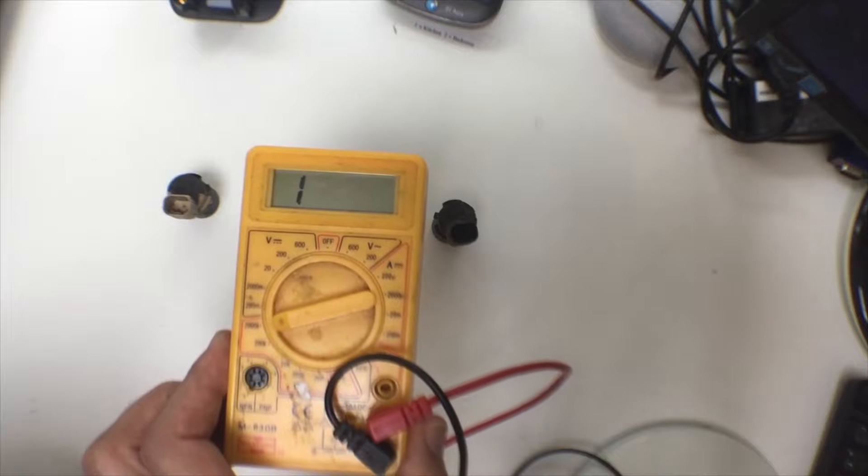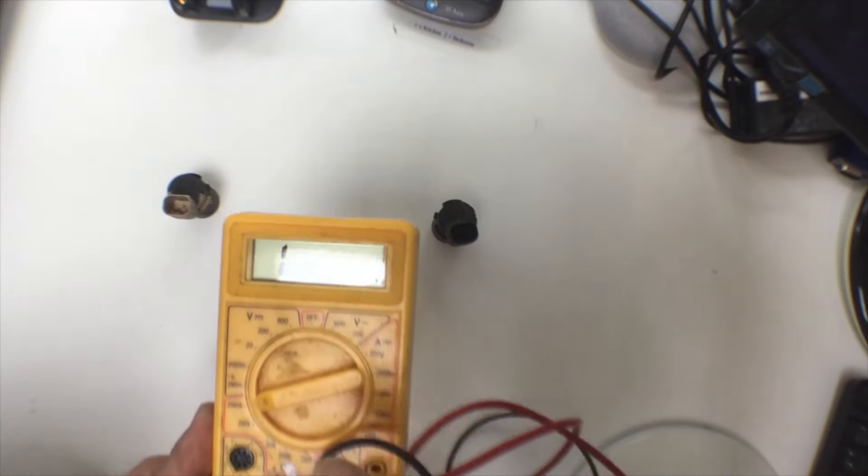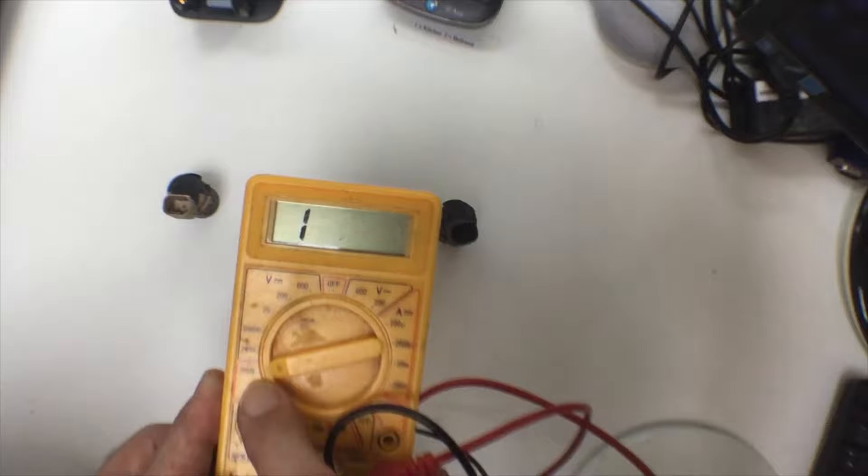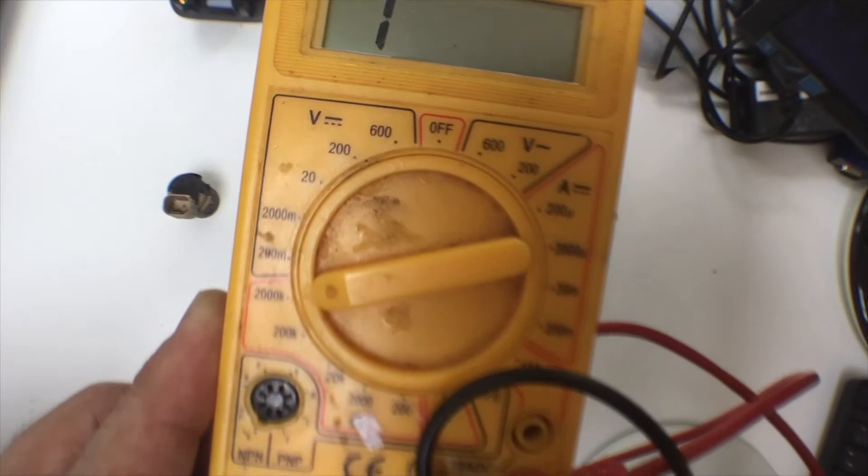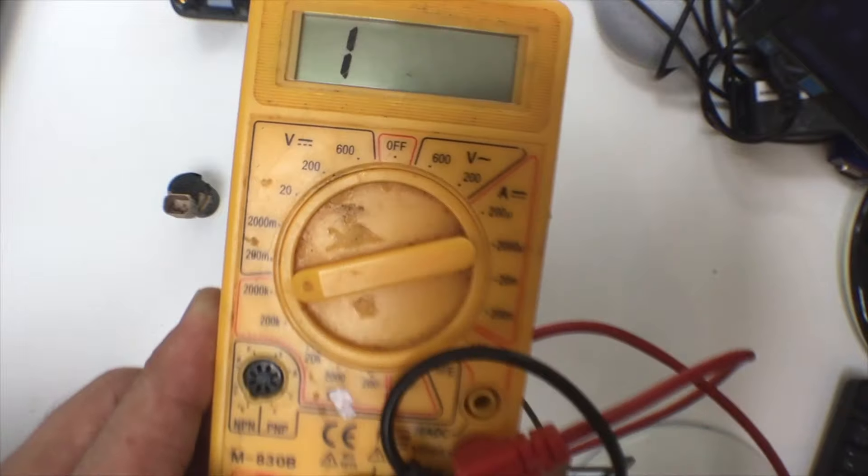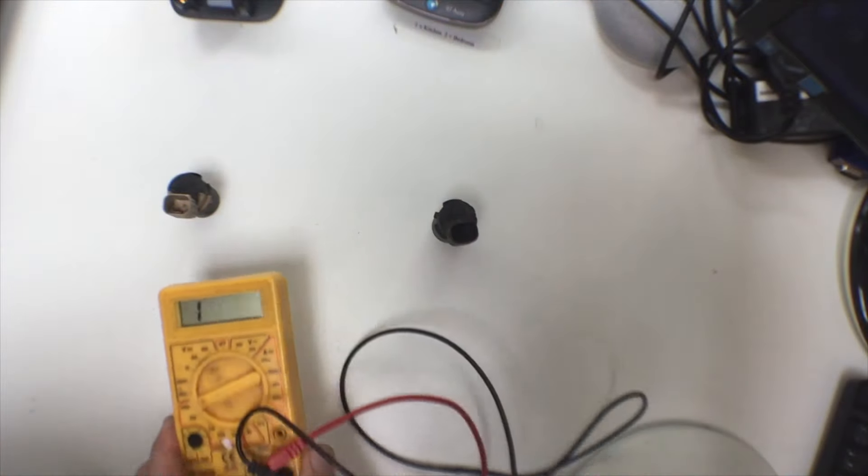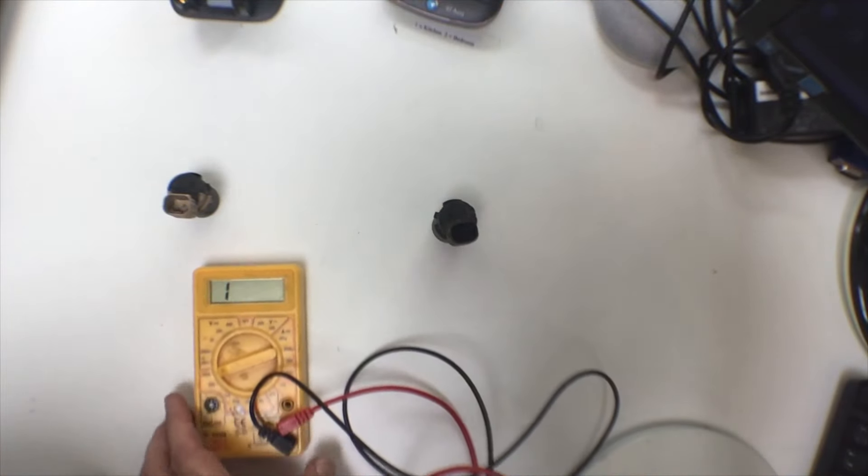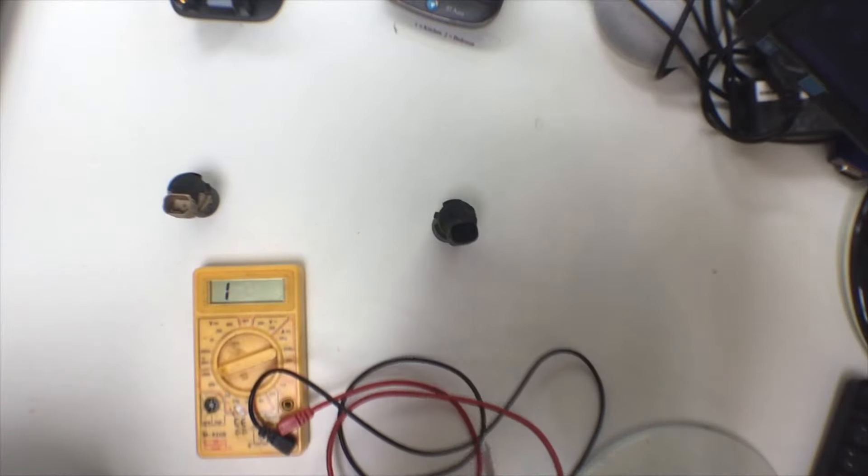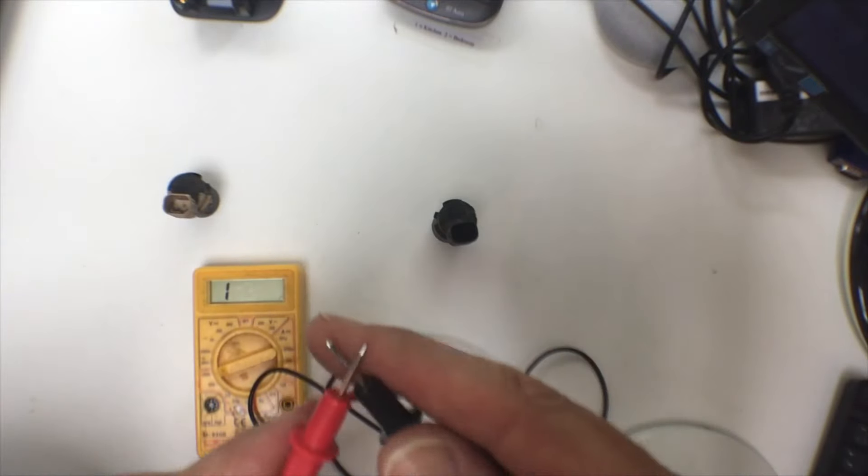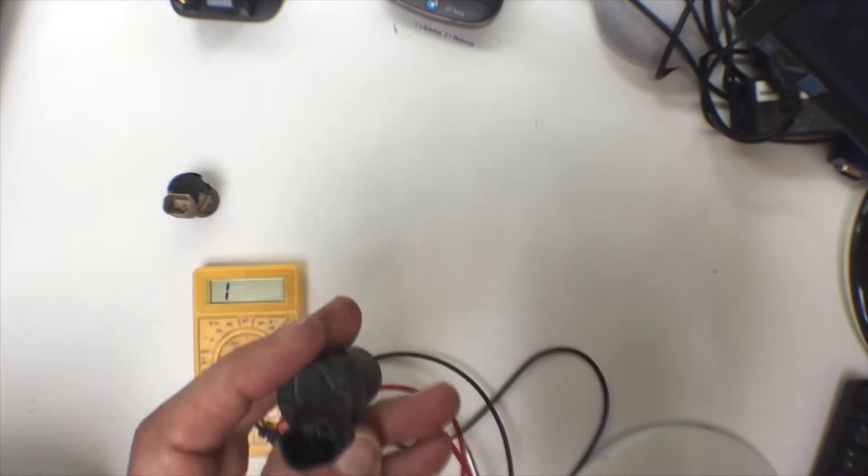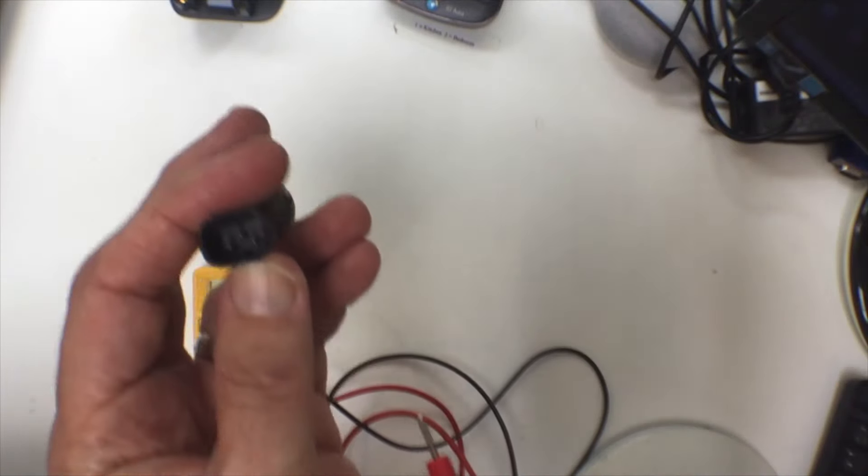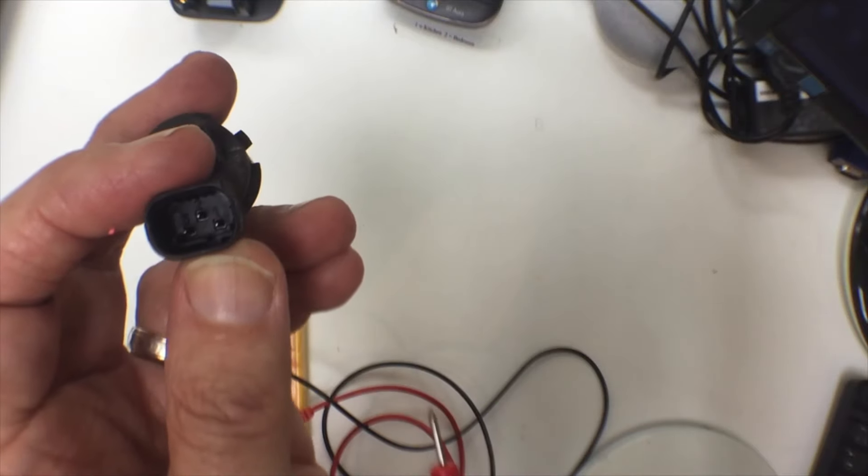I believe both of them are faulty, but you'll see what I mean in a minute. If we set the resistance to the highest possible resistance on the multimeter, which is 2000K, we're going to be testing between pins one and pins two.